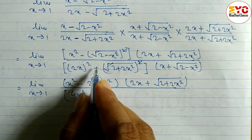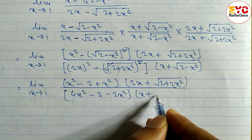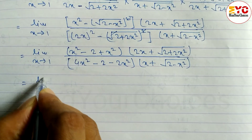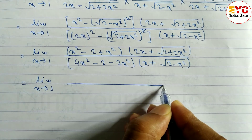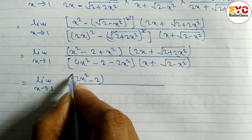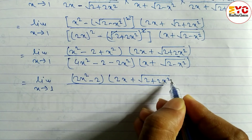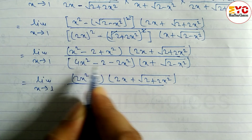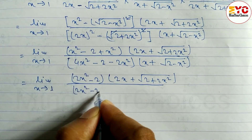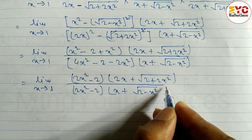So calculating further, the numerator is 2x² - 2 and denominator is also 2x² - 2. We still have the conjugate factors: numerator side has [x plus √(2 - x²)], and denominator side has [2x plus √(2 + 2x²)]. Now the like terms 2x² - 2 from numerator and 2x² - 2 from denominator can be cancelled.